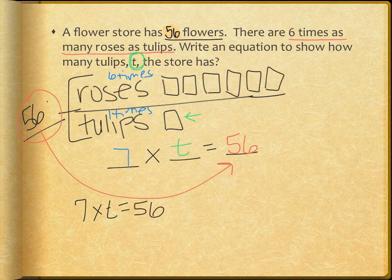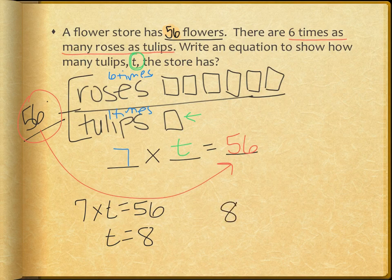Now to solve that, I just need to think: seven times what is 56? In this example, t equals eight. So this store has eight tulips.